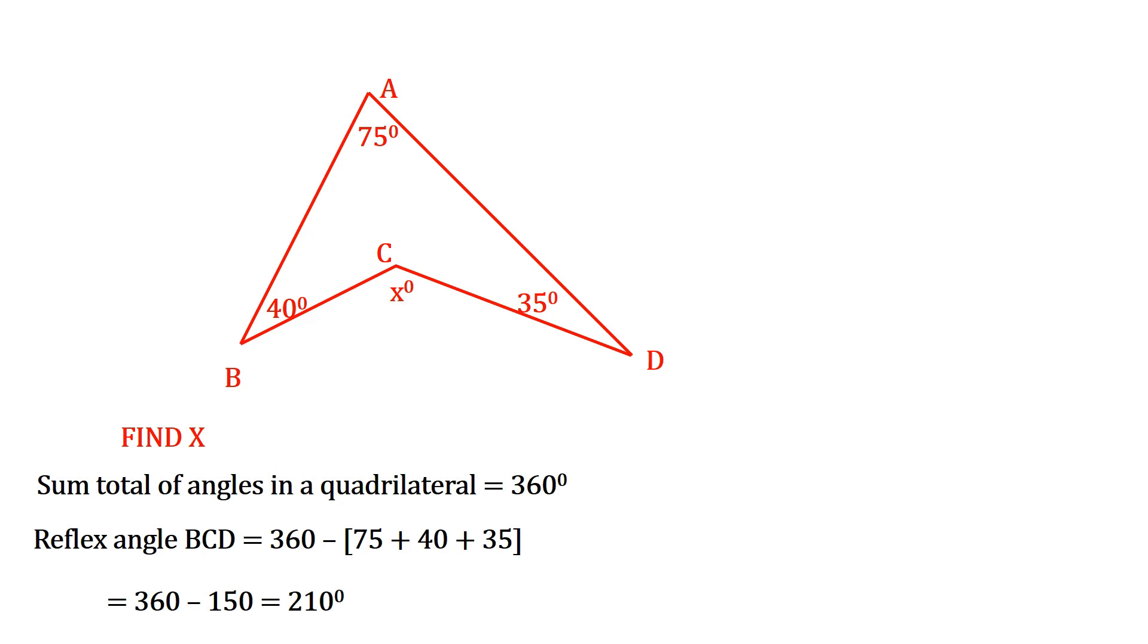Next, we need to find that obtuse angle BCD, which is our X. We know that the sum of angles at a point is always 360 degrees. At point C, we already have 210 degrees.